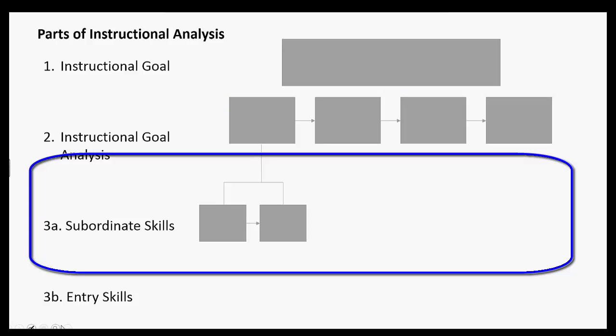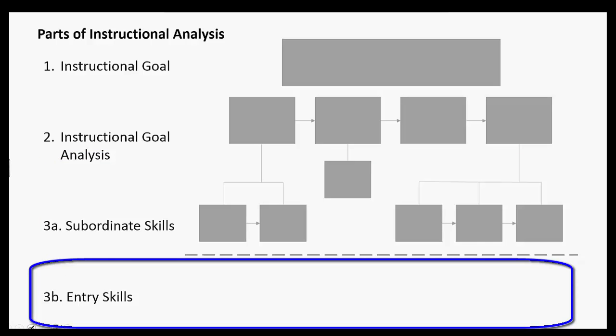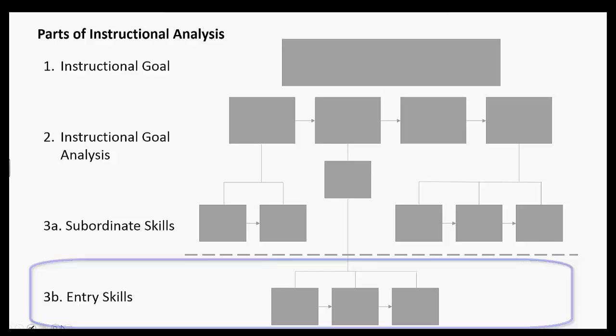You can represent the subordinate skills in this way. Below the dotted line are the entry skills — these are things a learner must have already mastered before they come to the training or use your instruction, and you can represent them in this way.